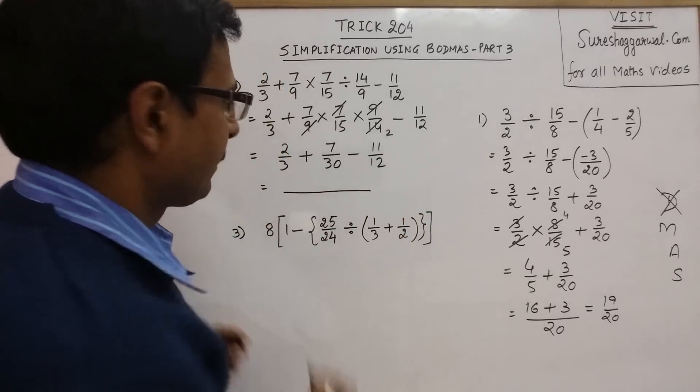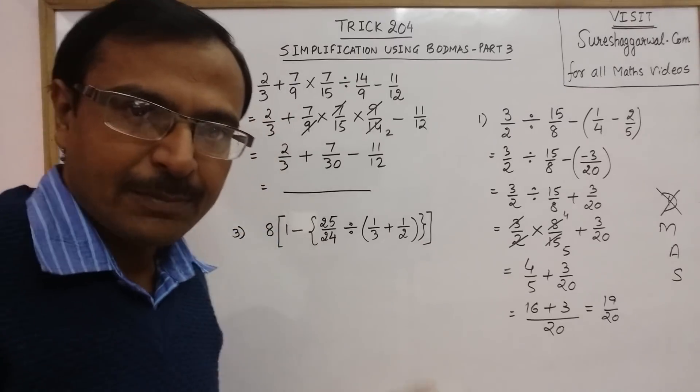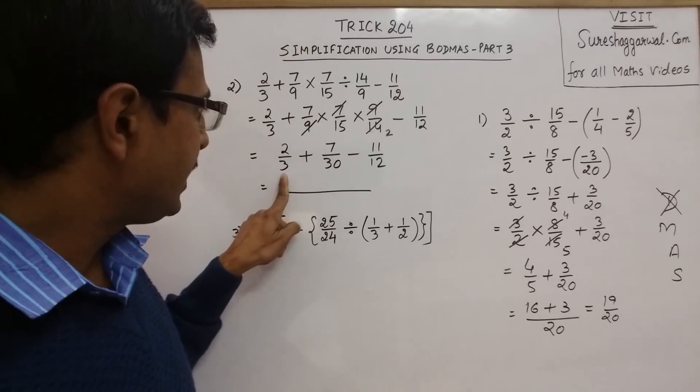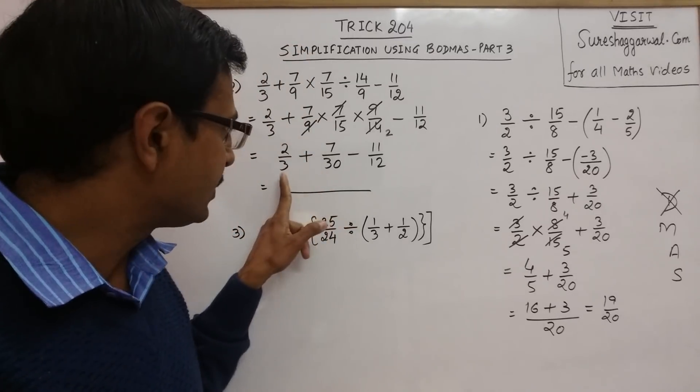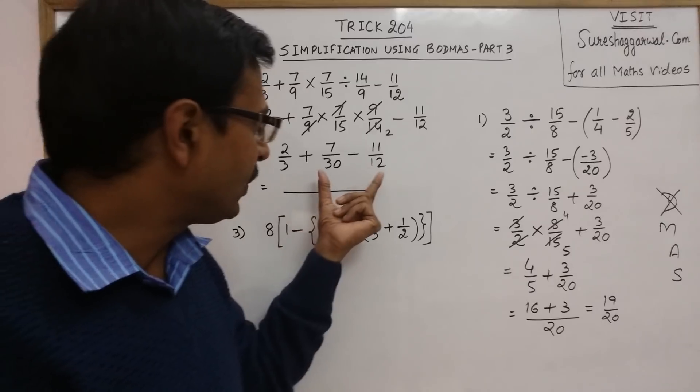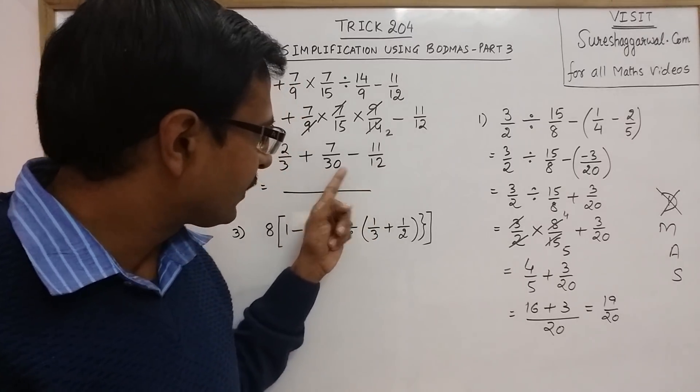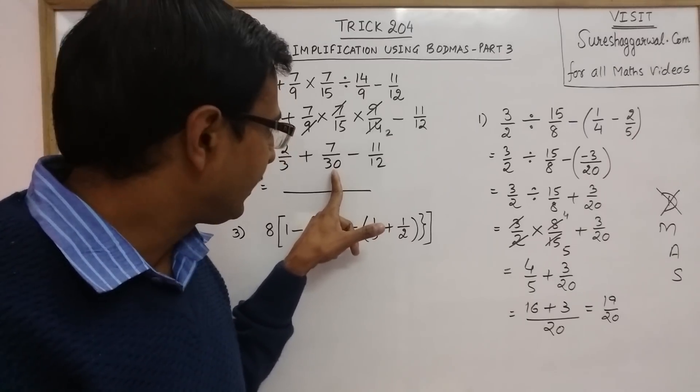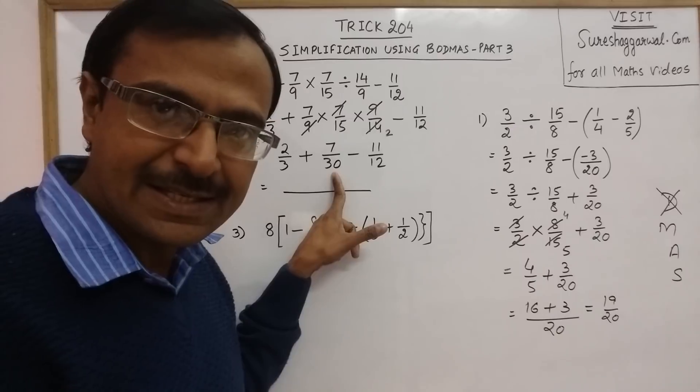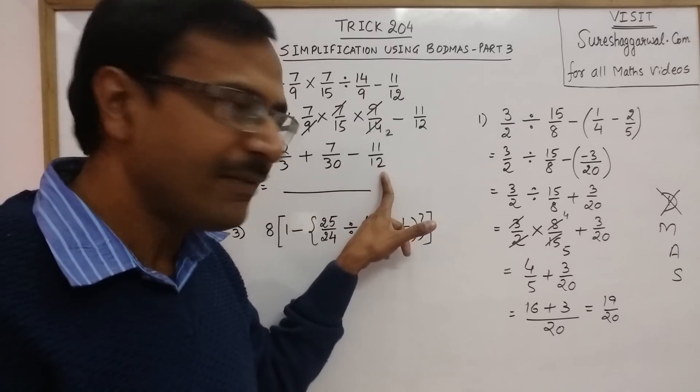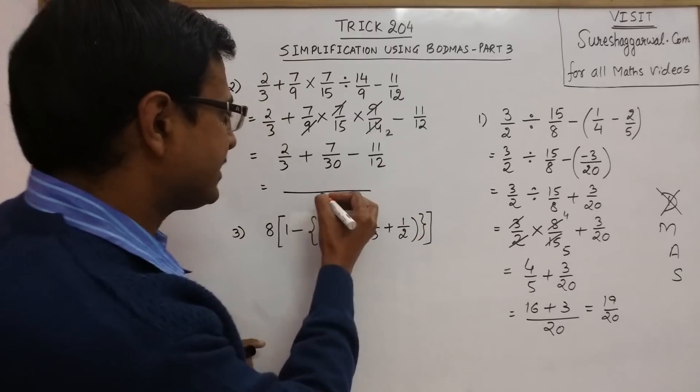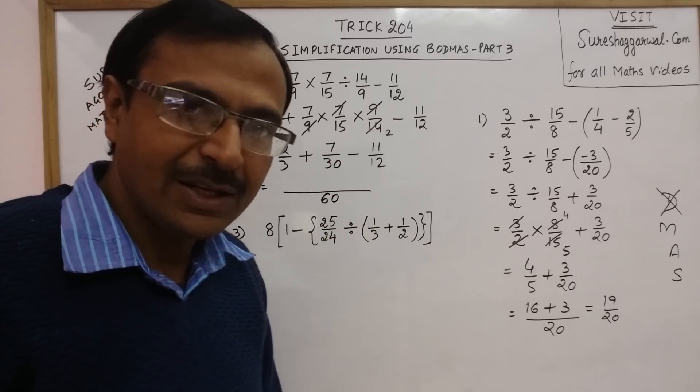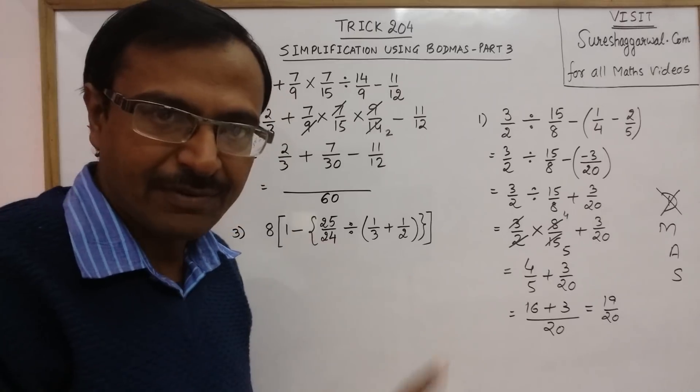I am solving it directly by taking the LCM. You can utilize the shortcut which I have posted in trick number 50. Now see, 3 is a factor of 30, so just forget 3. You are left with 12 and 30. 12 does not divide 30, so take multiples of 30. Next multiple of 30 is 60. 12 divides 60, so you have the LCM 60. Very easy, and without writing anything, you can find the LCM of the three fractions.